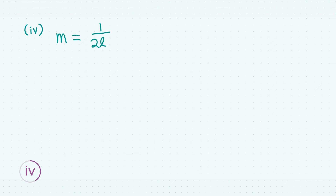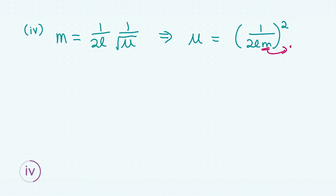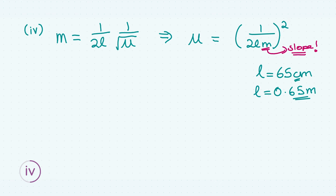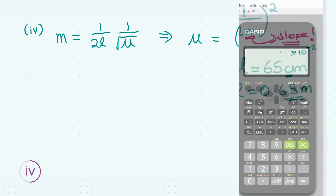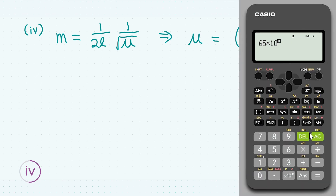Before finding any numerical values, let's rearrange. We know slope m equals 1/(2L√μ), so we can find an expression for μ, which boils down to μ = 1/(2Lm)². We already know from the top of the question that the string length is 65 centimetres, which is not an SI unit, so we convert: 65 × 10⁻² = 0.65 metres.